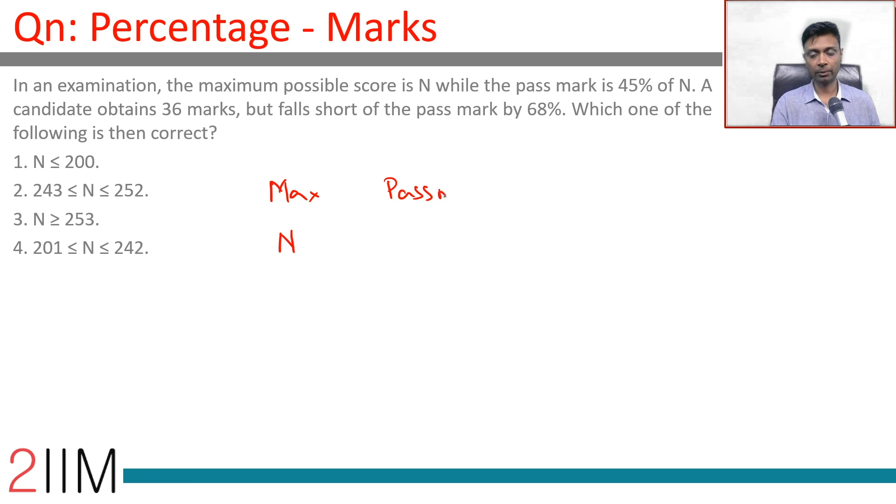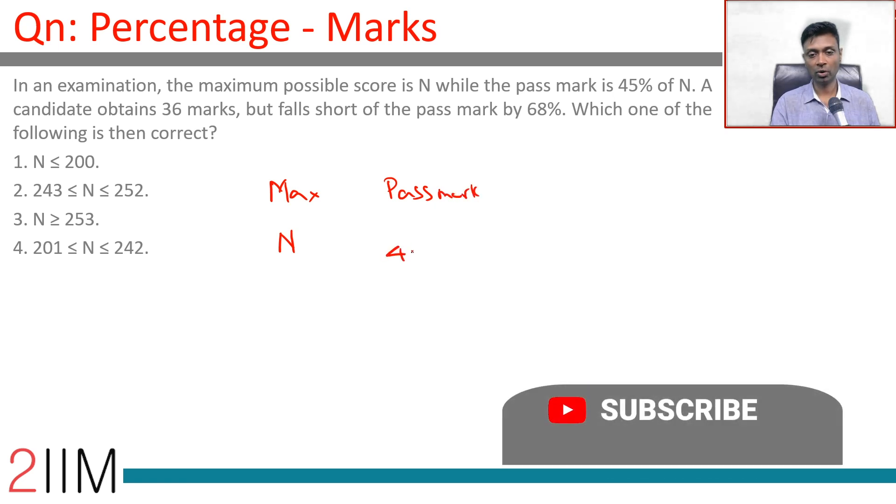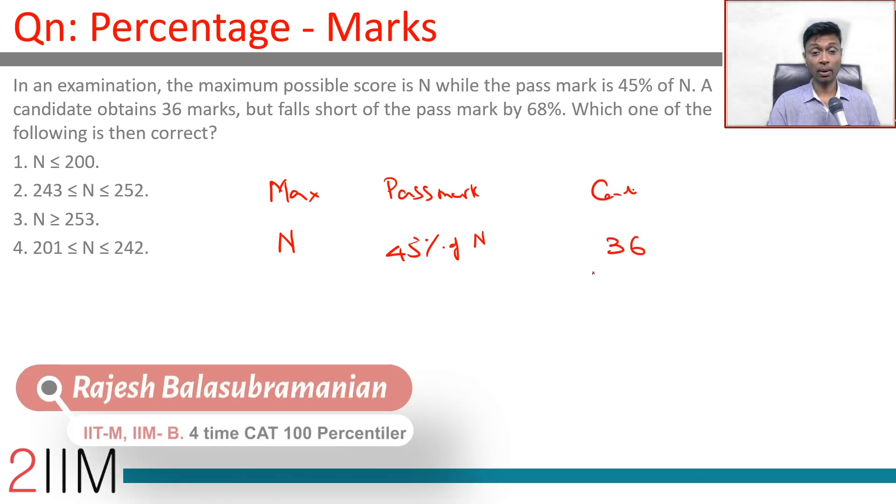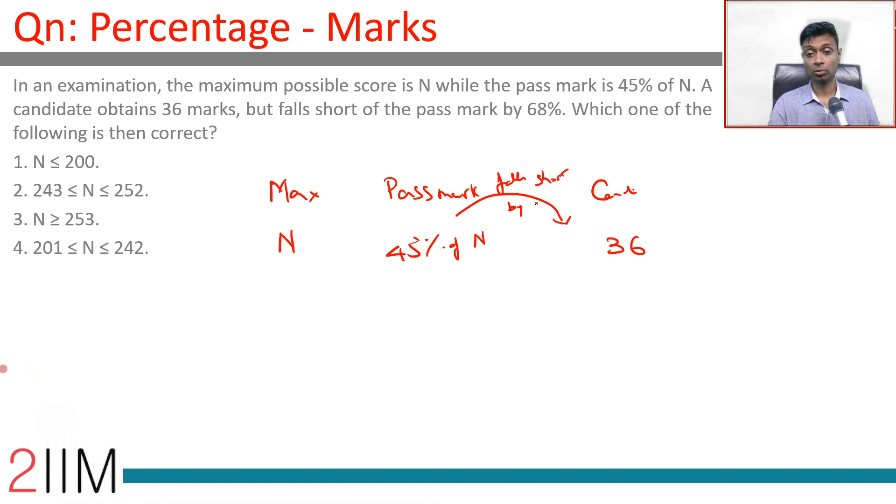The pass mark is 45% of N. A candidate obtains 36 marks but falls short of the pass mark by 68%.